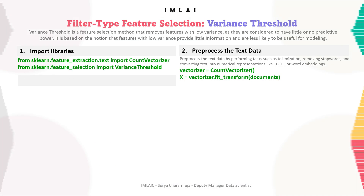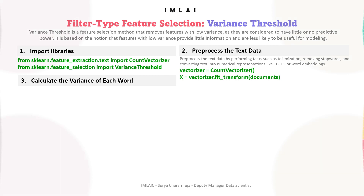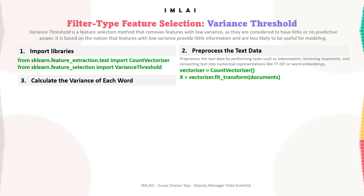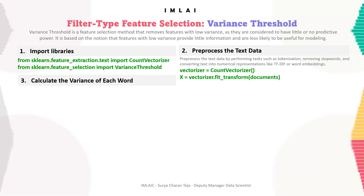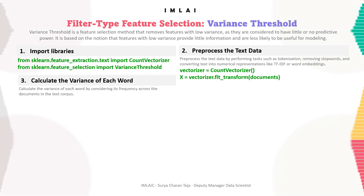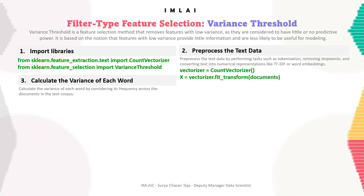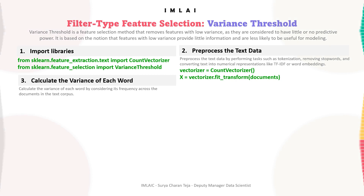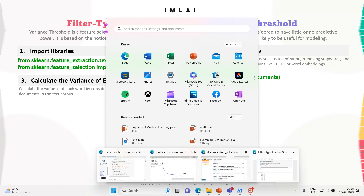Now let's move on to step three: calculate the variance of each word by considering its frequency across the documents in the text corpus. That's what we will be doing — calculating the variance of each word based on its frequency across the corpus.